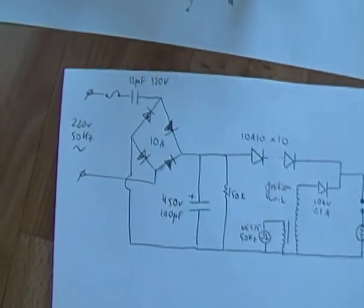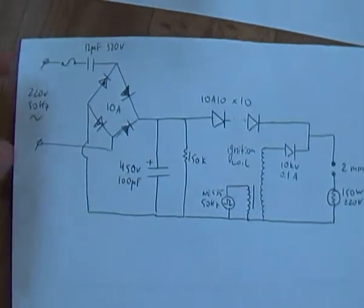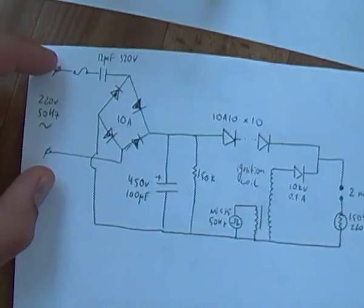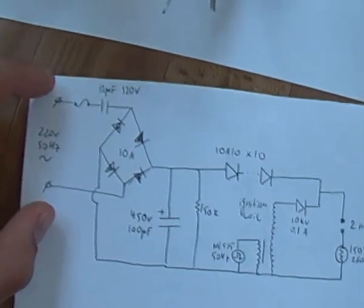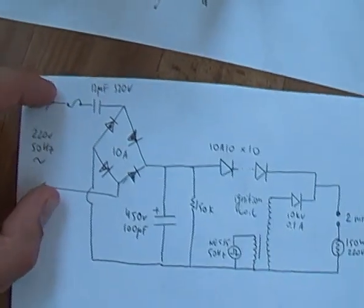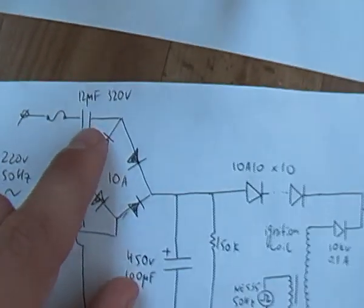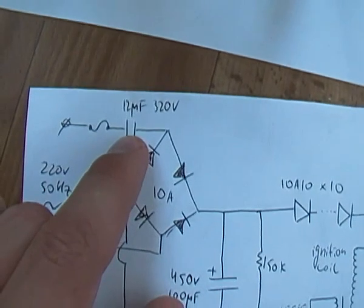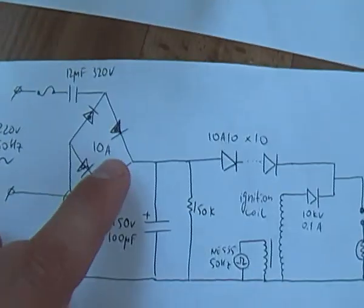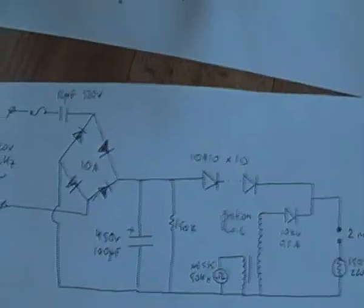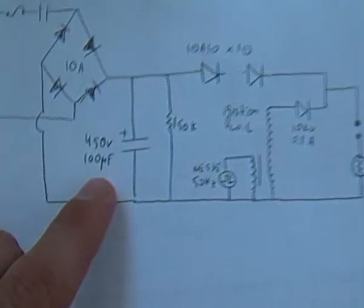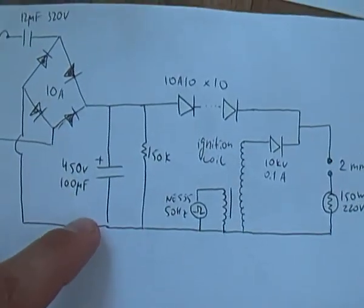So the first part of circuit is a low voltage power supply, consumes voltage from the grid, it goes through the fuse, current limit and capacitors at 12 microfarads, a diode bridge, big capacitor 100 microfarad.